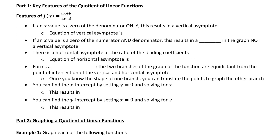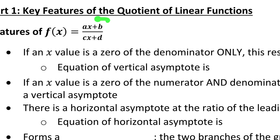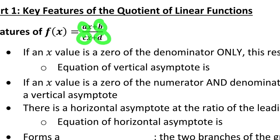When describing these key features, I'm going to make a rough sketch of a quotient of linear functions that I can reference. I'm going to be referencing this general quotient of linear functions, where the function in the numerator is ax plus b, and the function in the denominator is cx plus d, where the exponent on the x is 1, making them linear. And a, b, c, and d just stand for any constant value.